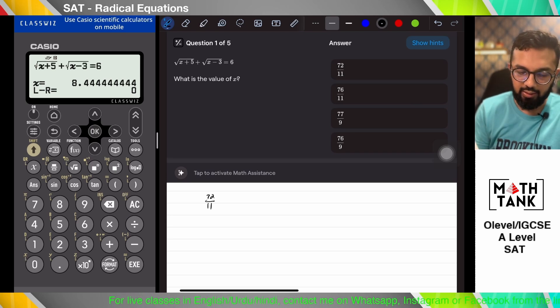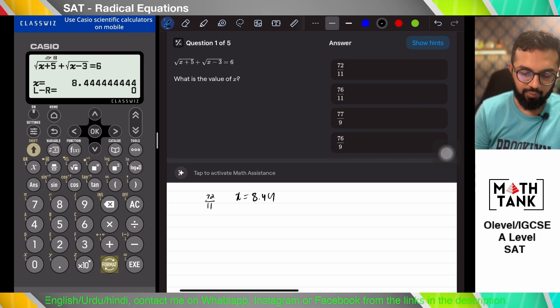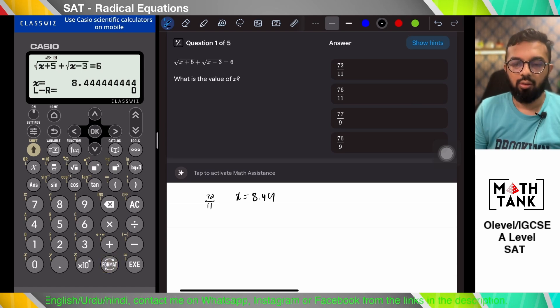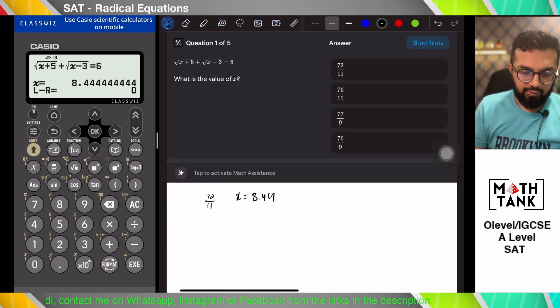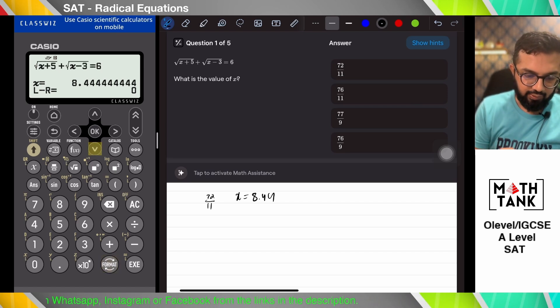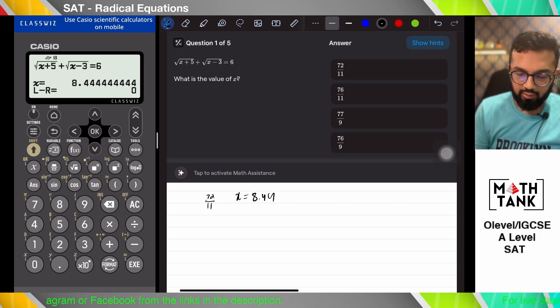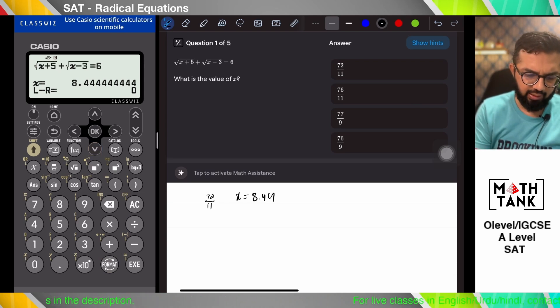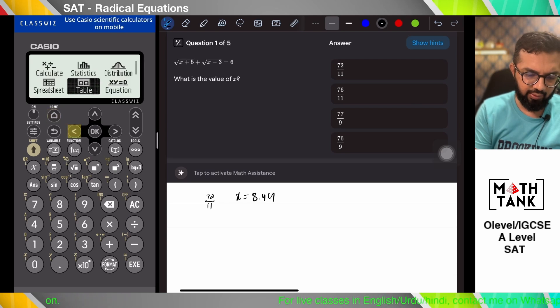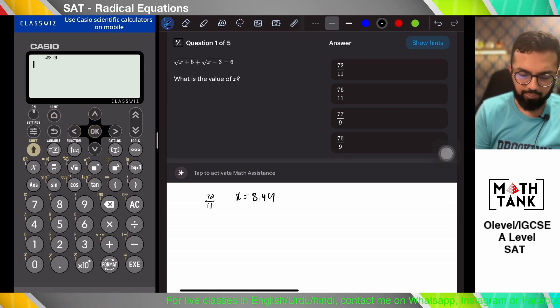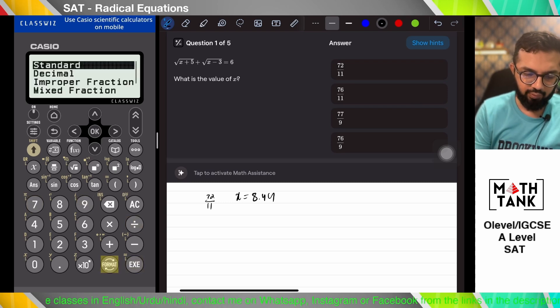It's giving me an answer as 8.44. I don't know if it's going to be able to change the format of this. So let's check if we can change the format of this. And I don't think I can. So let's go back and see if we can convert the answer options into seeing which one is 8.44.